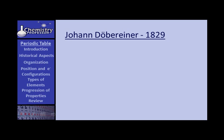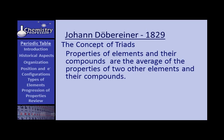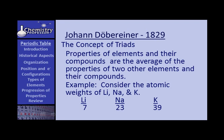About 15 years later, Döbereiner gave us the concept we call triads. What he did was note that properties of elements and their compounds appeared to be the average of the properties of two other elements and their compounds.